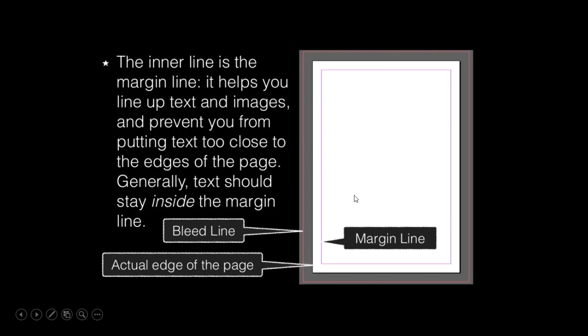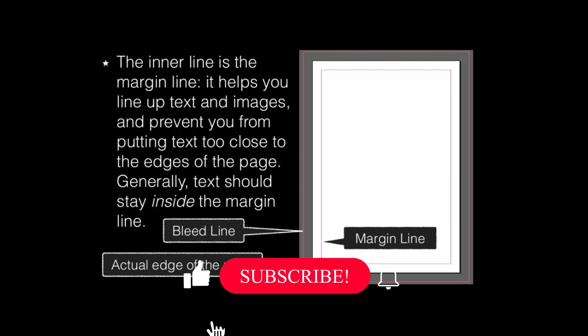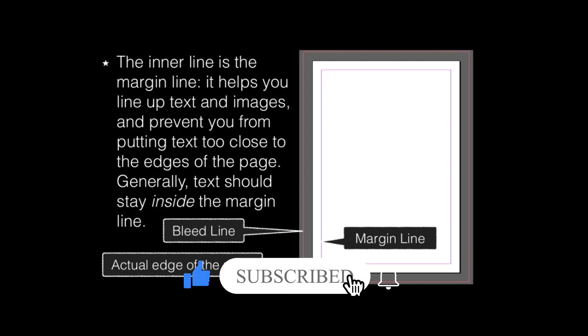You can see this pink line in border style — this is the marginal line. Whatever you do, it indicates that you should keep your content inside the marginal line. The marginal line helps you place tags and images in the proper way so you can align and design correctly.